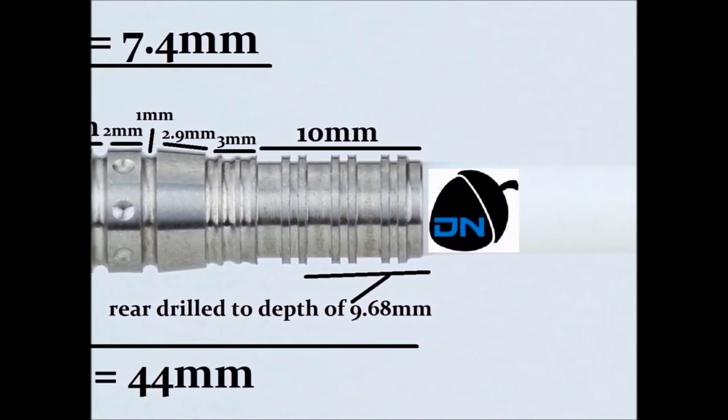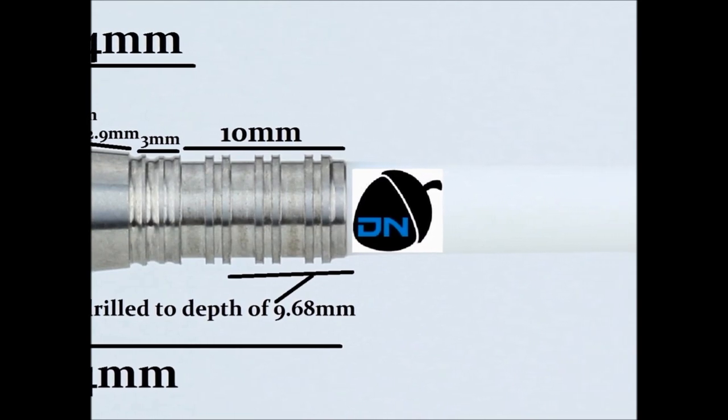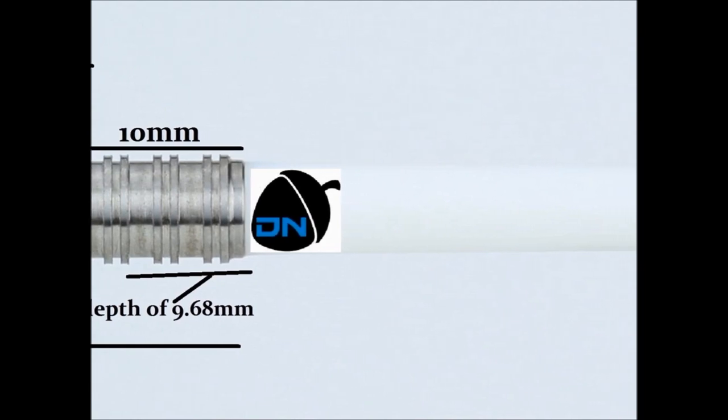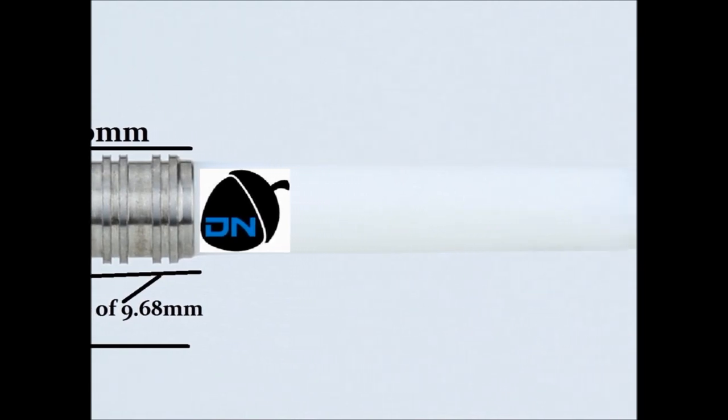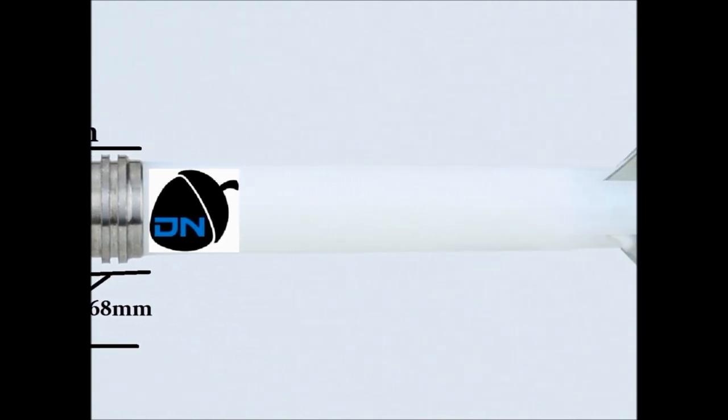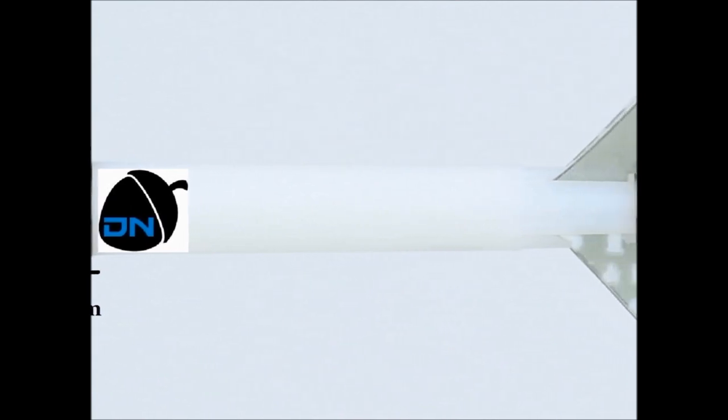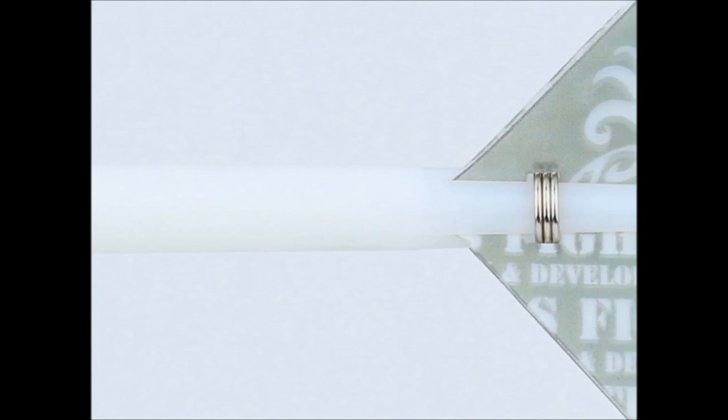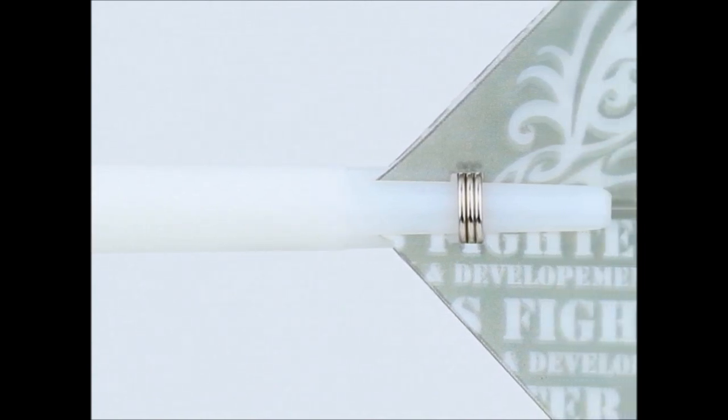And then you go into the grippy section on the rear of the barrel which starts with a kind of a ringed shark grip. Which is 3mm wide. And then the rest of the barrel is made up of these double rings with wide grooves in between. That's 10mm wide. Overall length is 44mm and the width is 7.4mm. Alright then let's do some measurements on the barrel.